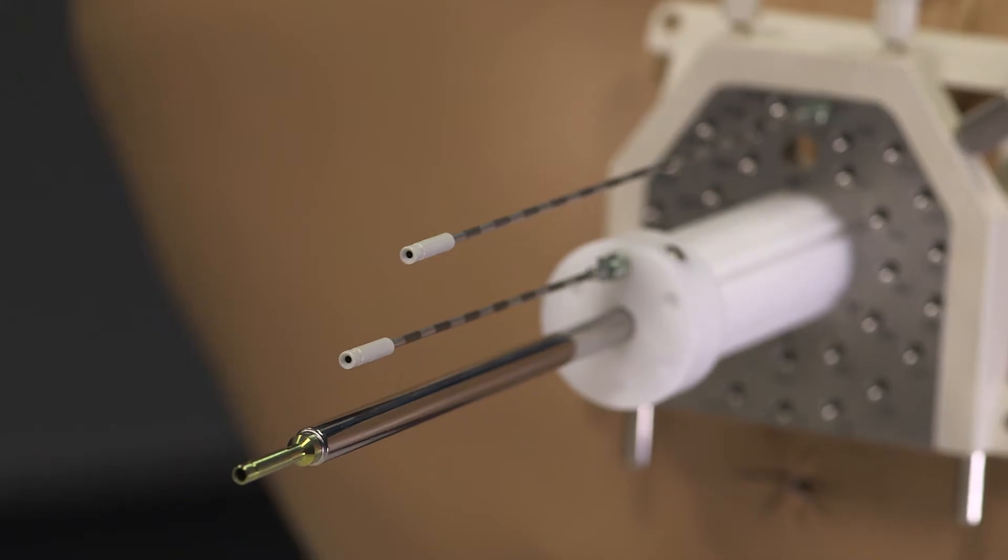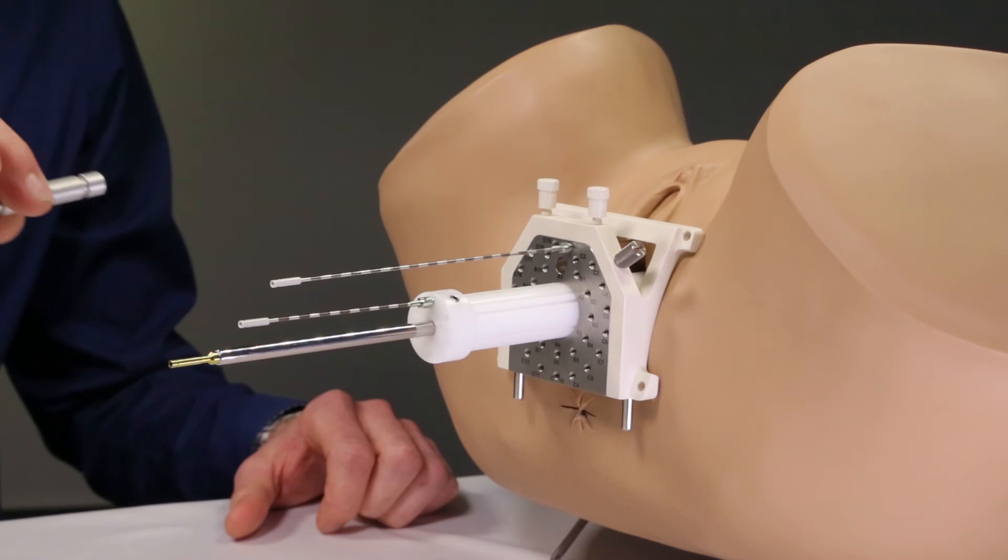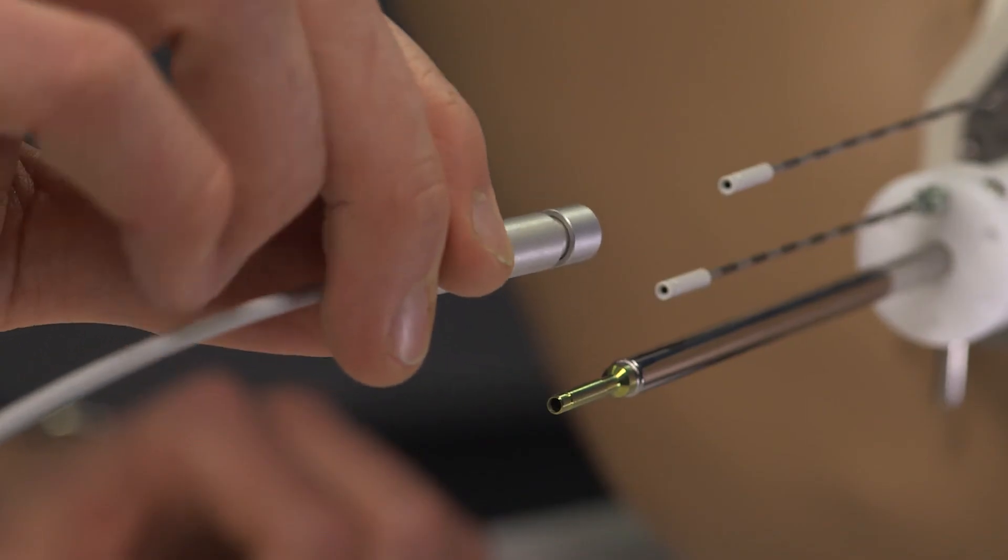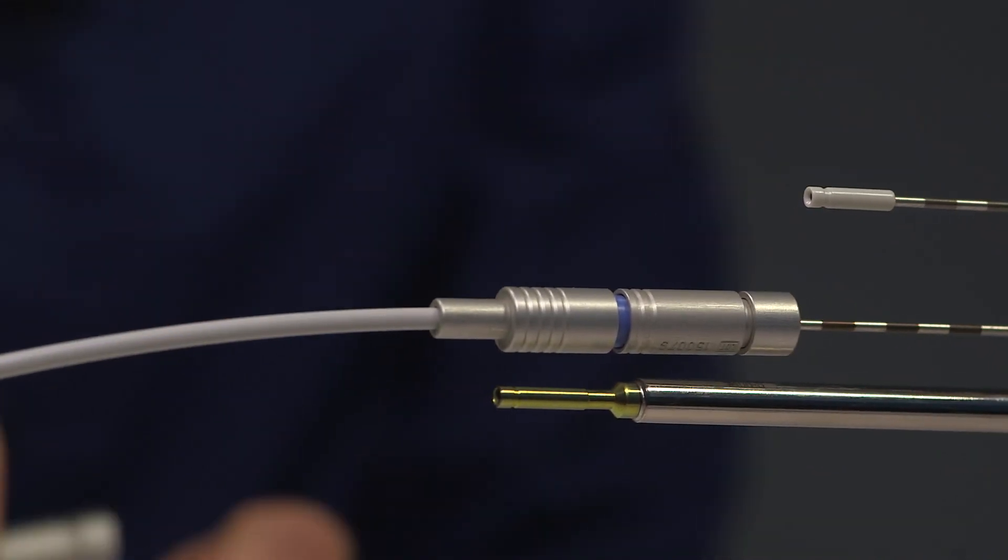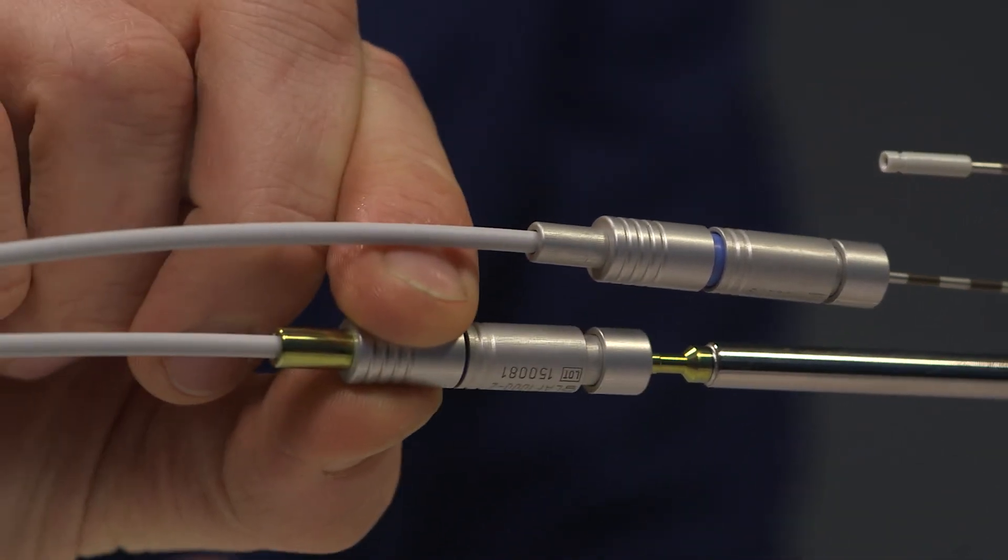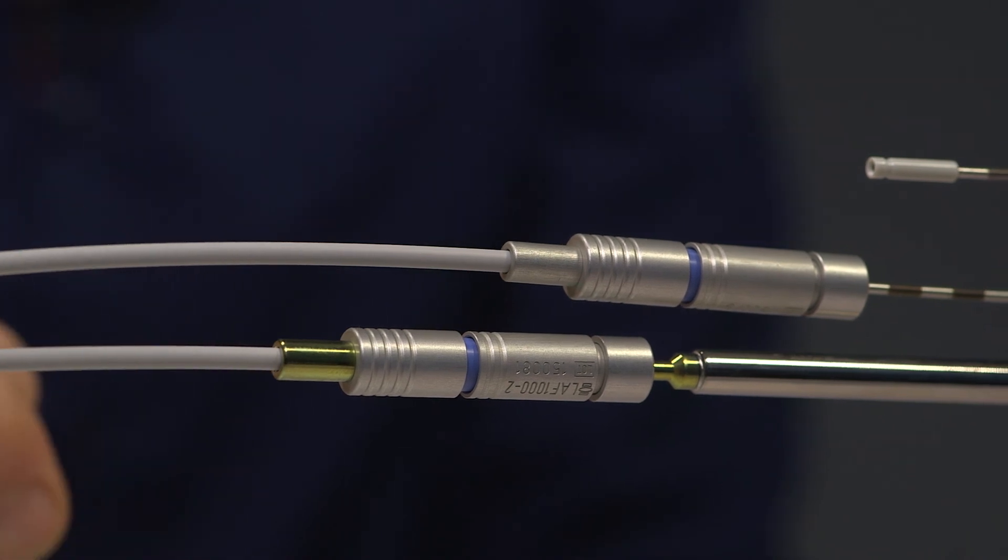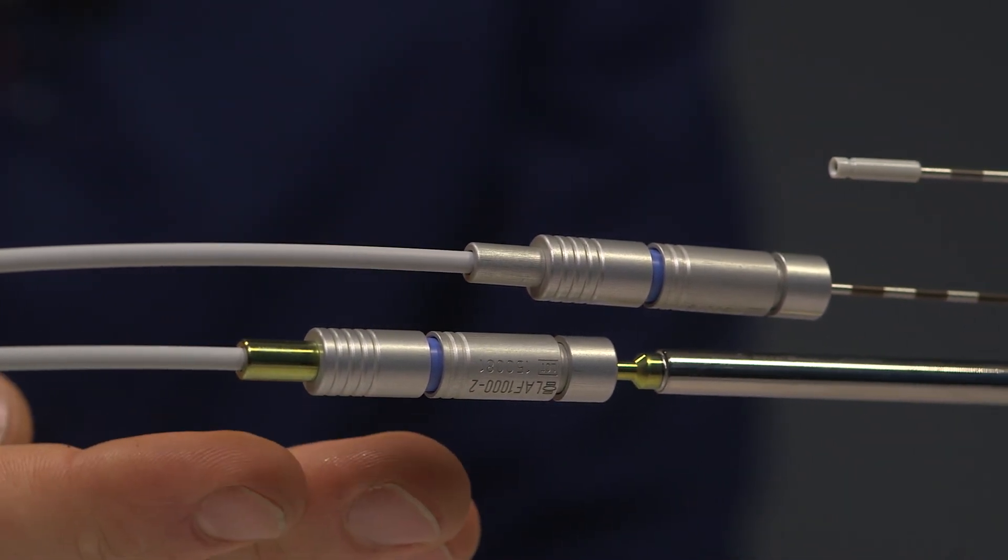In the last stage we connect the interstitial needles with the afterloader and the IU tube with the afterloader using transfer tubes. If you hear and feel a click you will know that the connection is secure.